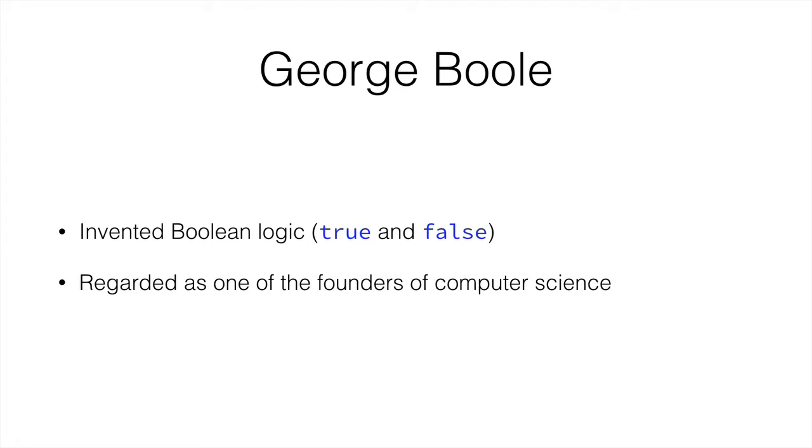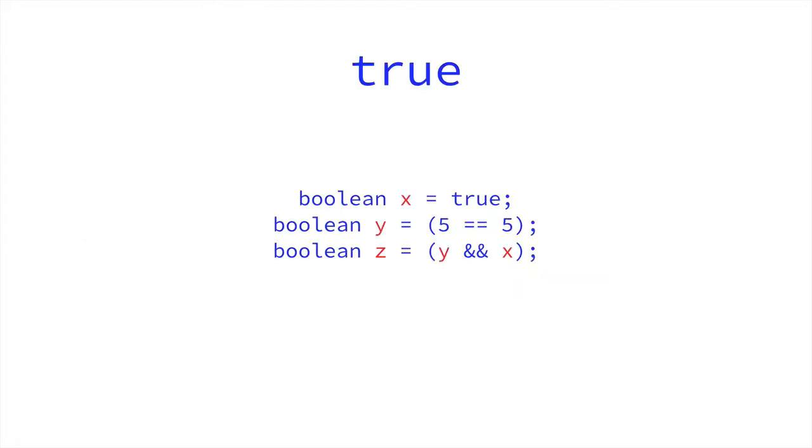Here are a couple examples of some things we have and haven't seen. The first one is Boolean x equals true. We've seen that. We can assign a true or false directly to a Boolean variable. We have 5 equals equals 5. That value is true. We've seen the equals equals operator already. And we can assign the outcome of that comparison to the variable y. In this case, it would be true.